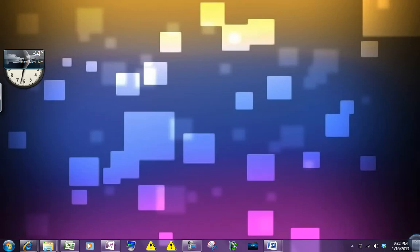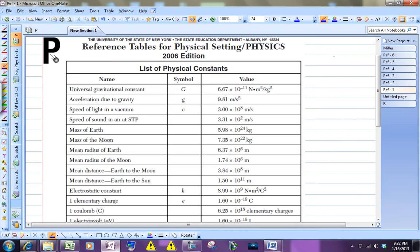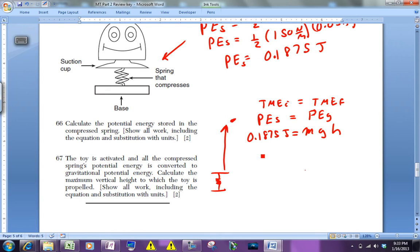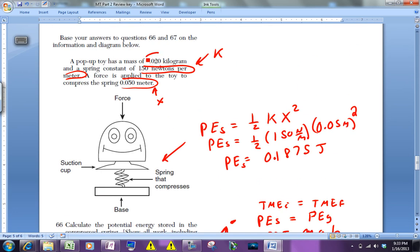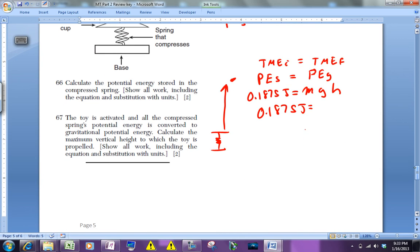So we're saying 0.1875 joules equals the mass which we're told is 0.2 kilograms. And the G is 9.8 meters per second squared and H is what we're looking for.